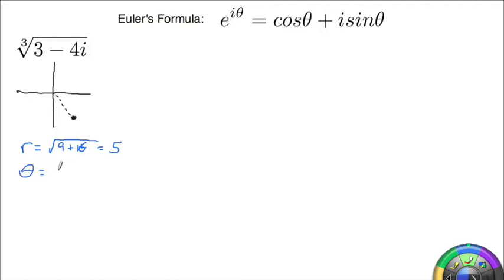Alright, so tan inverse is going to work. So we're going to get the tan inverse of negative 4 over 3, b over a. And this is going to give me approximately negative 53.1 degrees.